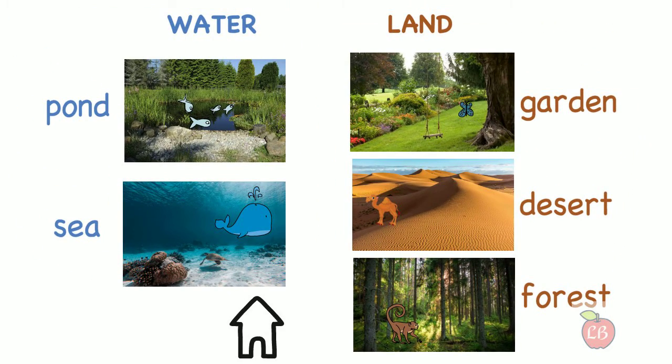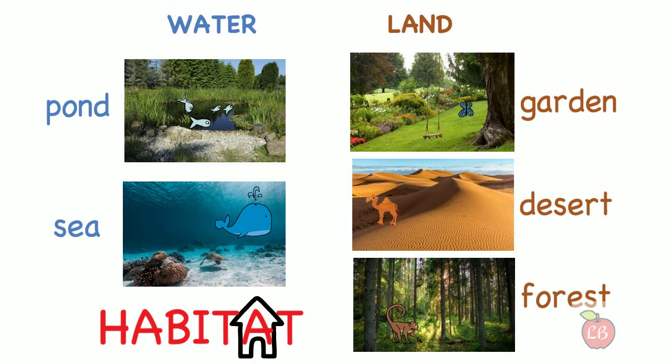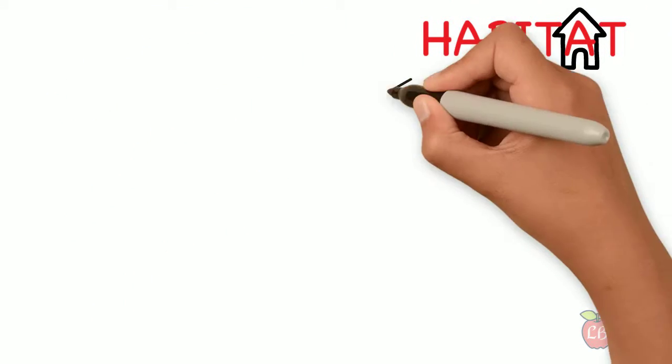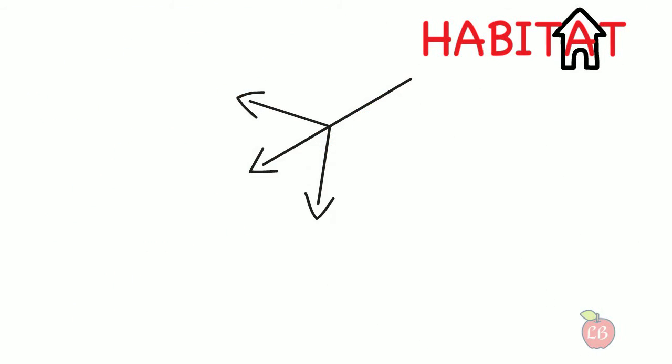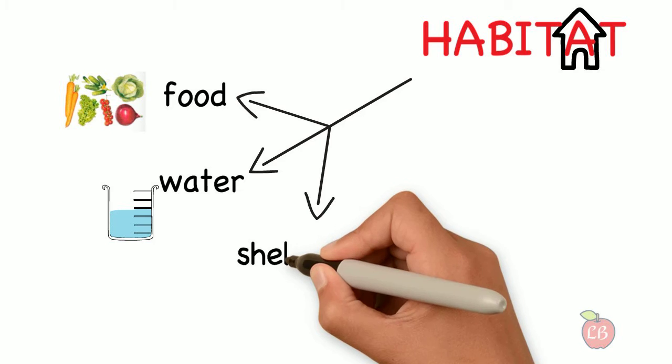All these places, which are natural homes for animals, are called habitats. In their habitats, animals can find three things: food, water, and also shelter.